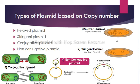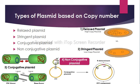Conjugative plasmid contains tra genes which perform the complex process of conjugation. Conjugative plasmids can be transferred from one bacterium to another. Examples of conjugative plasmid are F plasmid and R plasmid. Non-conjugative plasmid cannot initiate conjugation because they have no genes encoding pilus, so this plasmid cannot transfer from one bacterium to another.